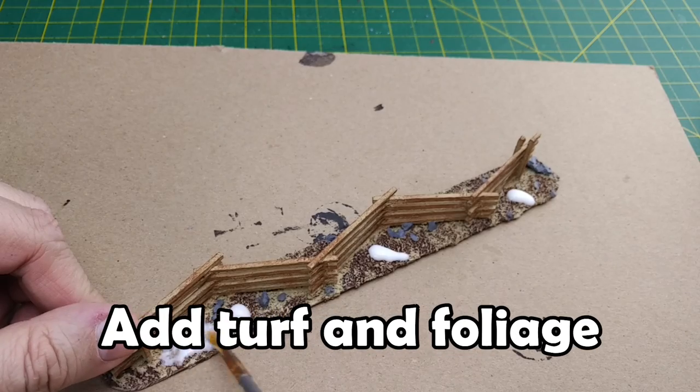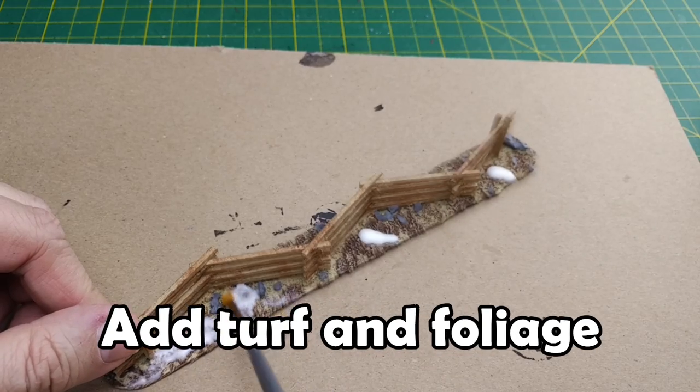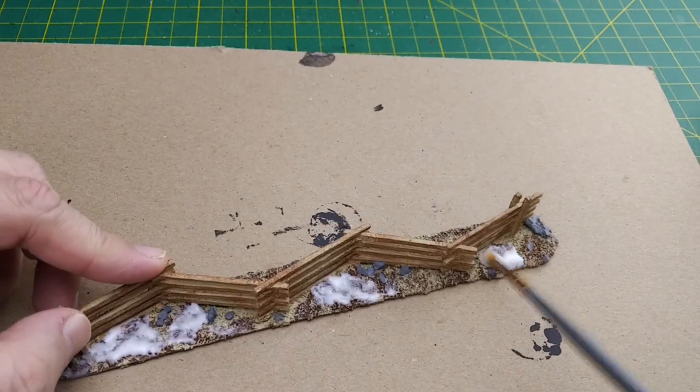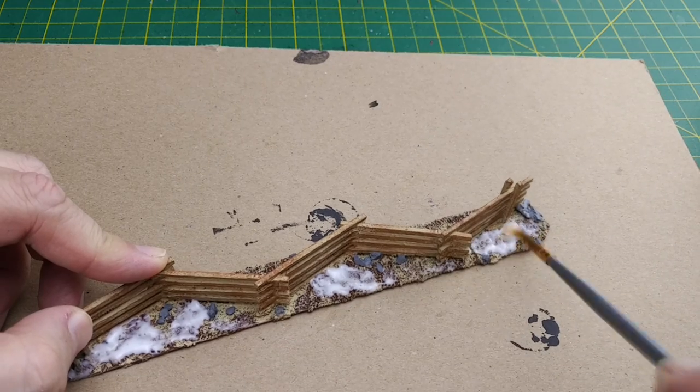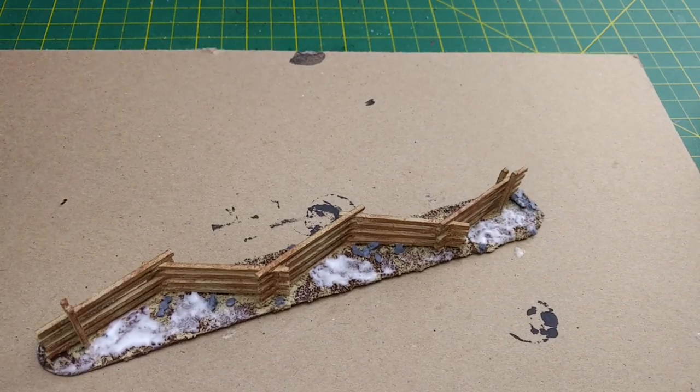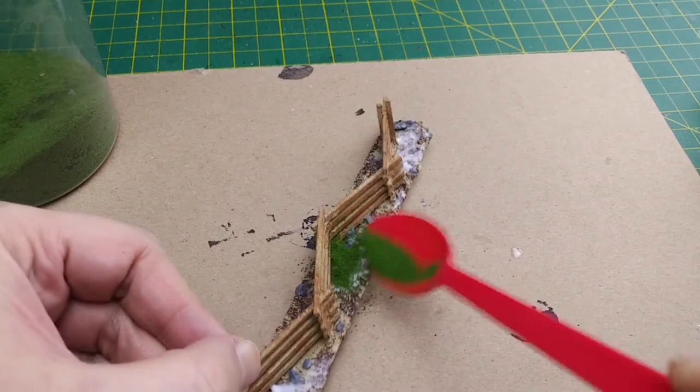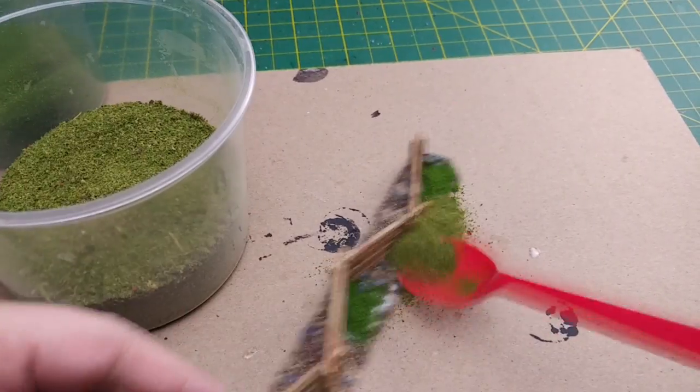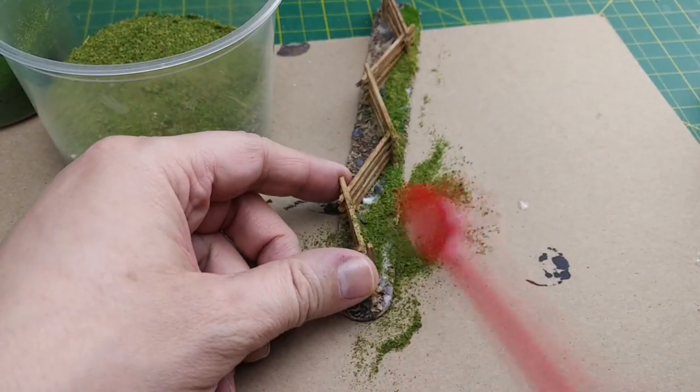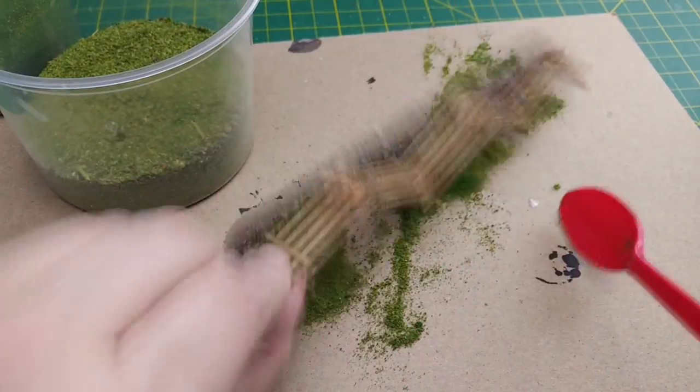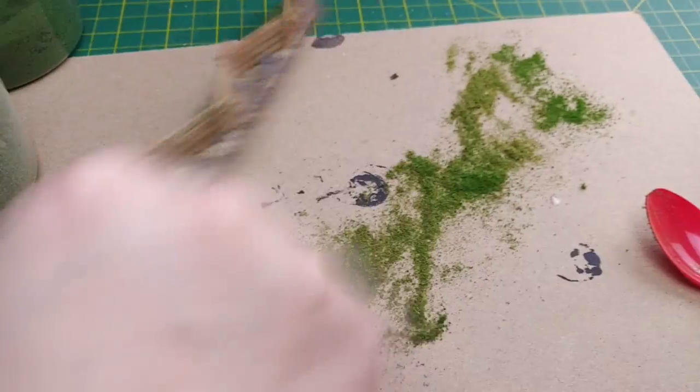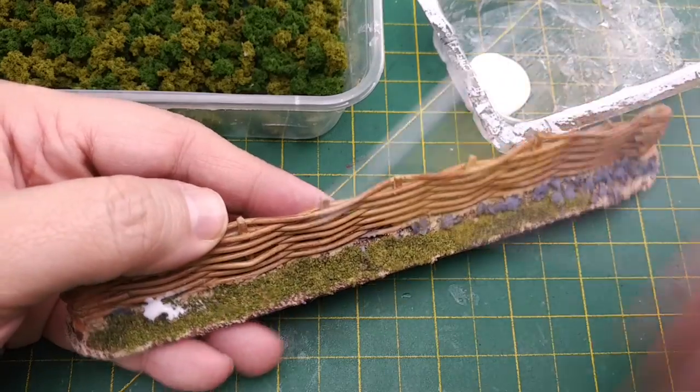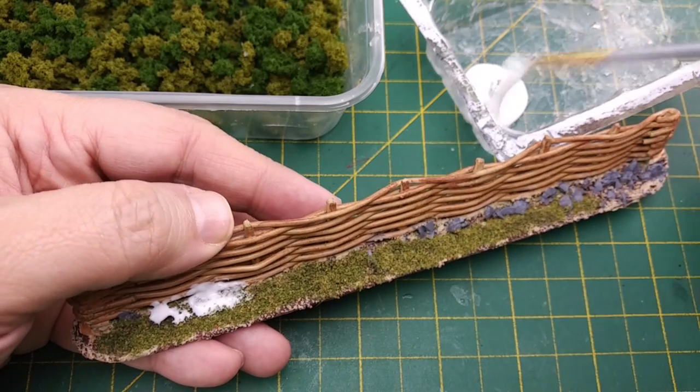Next, using some PVA glue, we're going to add some different colored turf to our base. Using a ratty old brush, we can spread some PVA glue around our fence. When adding the turf, I suggest using two different colors, and leaving areas of the brown base exposed. I also suggest that you avoid covering the rocks we painted. After our turf has dried, we can remove the excess.